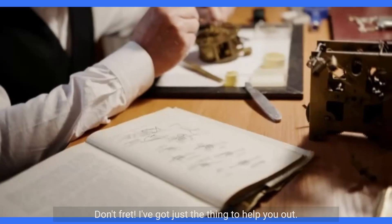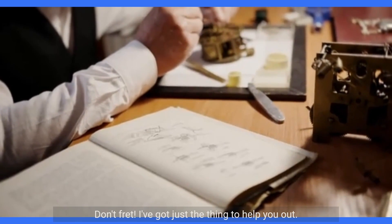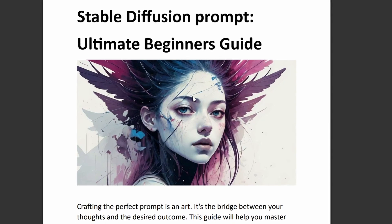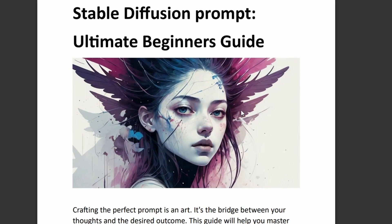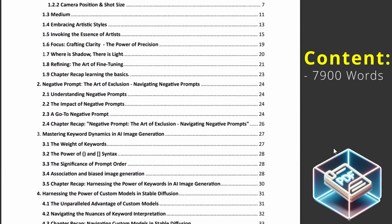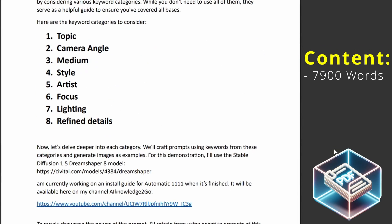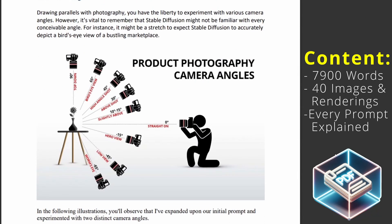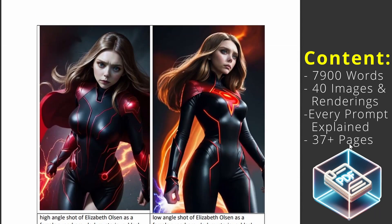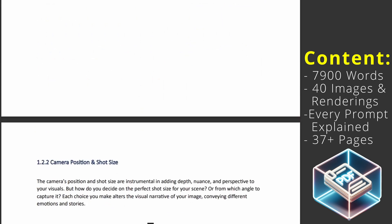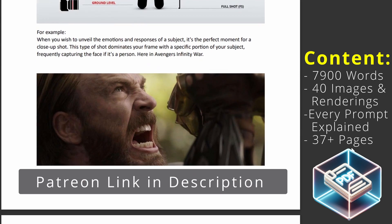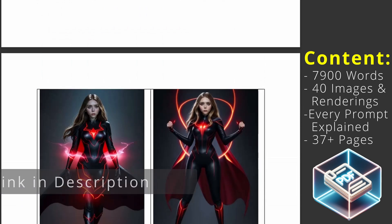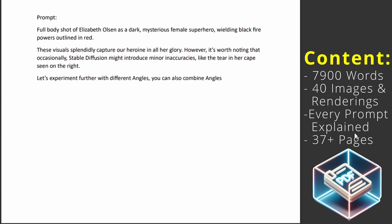Feeling a bit lost in what to prompt in your AI image generation? Then I've got just the thing for you — my absolute beginner's guide to prompting. This comprehensive guide is packed with over 7,900 words of expert advice, more than 40 example images and renderings, every single prompt detailed for clarity, and it contains 37 pages. You can get a sneak peek of the guide for free. Just head over to my Patreon and grab your free copy.